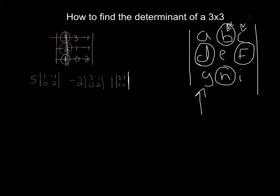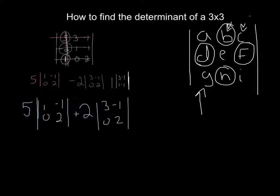So now my new determinant is going to be 5 times the determinant of 1, -1, 0, 2. But the cofactor in the D position, the column 2, row 1 there, the rows and columns add up to be an odd number. So we're going to have to change that sign. Instead of -2, it's going to be +2 times the determinant of 3, -1, 0, and 2. And then plus 1 times the determinant of 3, -1, 1, -1.